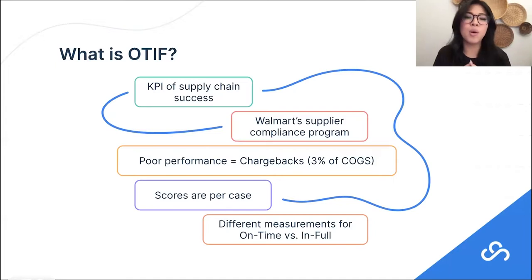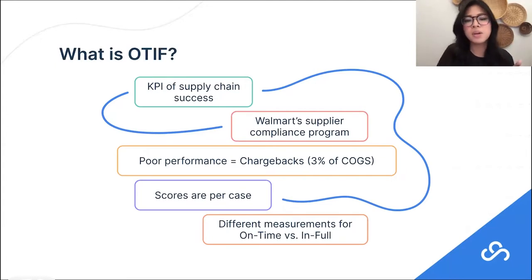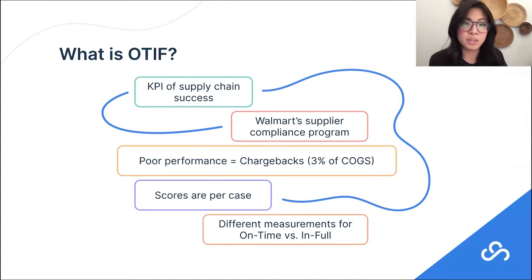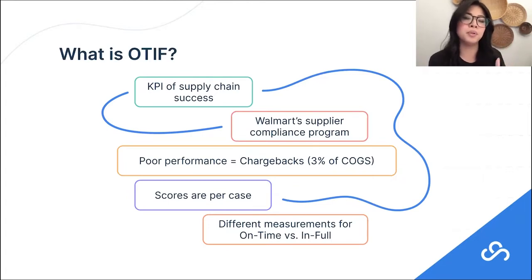OTIF is a KPI of supply chain success. It's Walmart's way of judging whether the orders they're getting from you, the supplier, are arriving on time and arriving in full. This applies to almost every supplier that currently sells product to Walmart. Why OTIF is a really big deal is because it is associated with chargebacks. Walmart has a very specific OTIF goal or threshold — that goal is 98%. Whatever Walmart orders, you have to get it to them 98% on time and 98% in full. Any cases that fall below that 98% threshold, you are liable for chargebacks. Walmart calculates those chargebacks as basically 3% of your cost of goods sold.